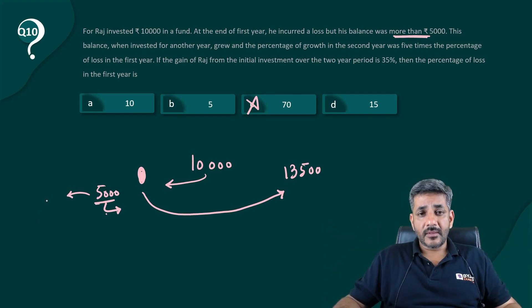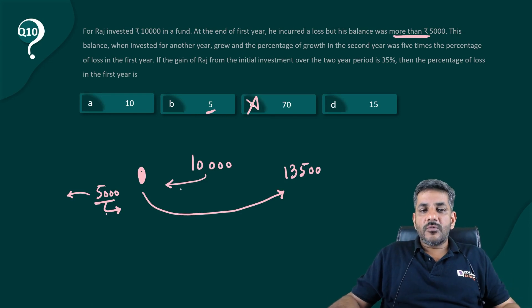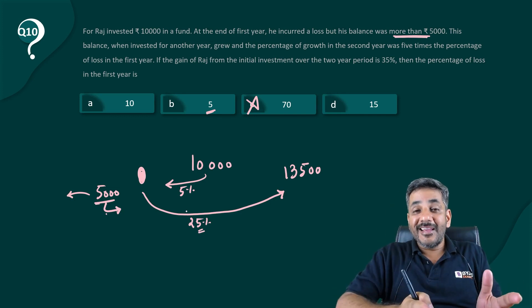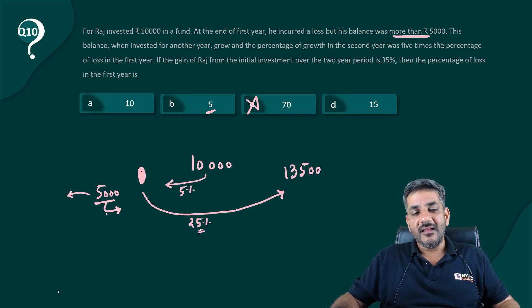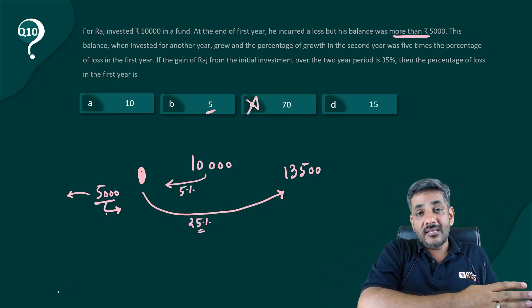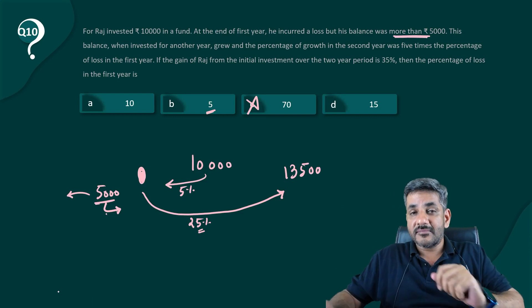So one of these three would be the answer. When I look at 5, if there was a decrease of 5, next time there would be an increase of 25. Even if I increase 10,000 by 25%, still it would not become 13,500.